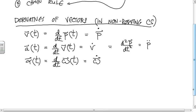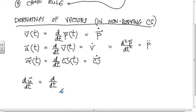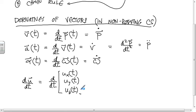To take the time derivative of a vector u, where u has components u_x(t), u_y(t), and u_z(t), you simply take the time derivatives of each individual component: u_x-dot, u_y-dot, u_z-dot.